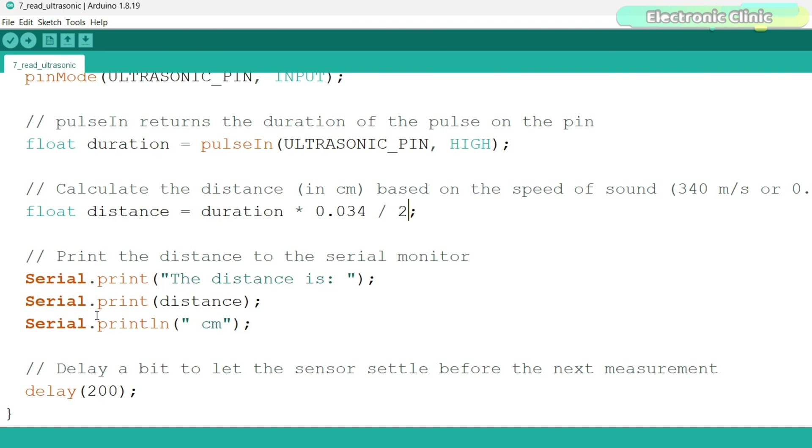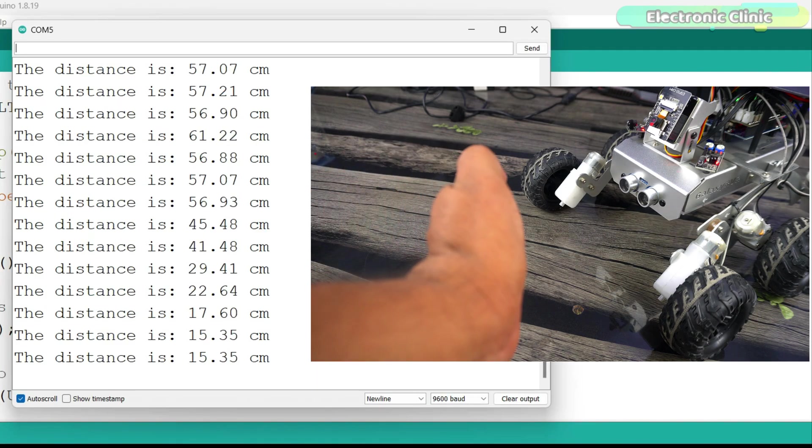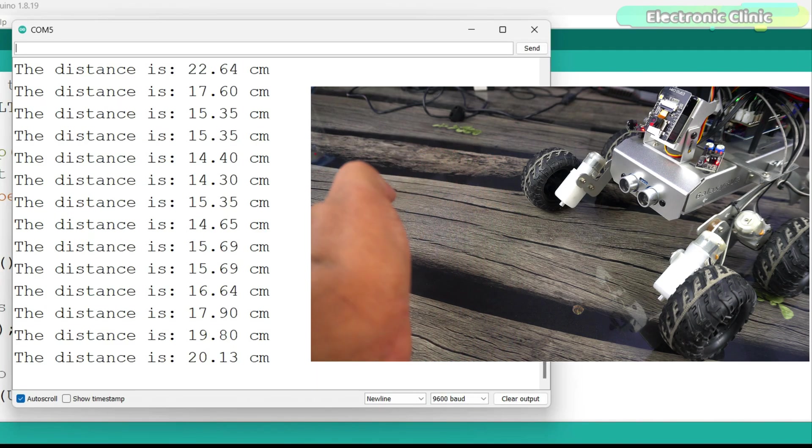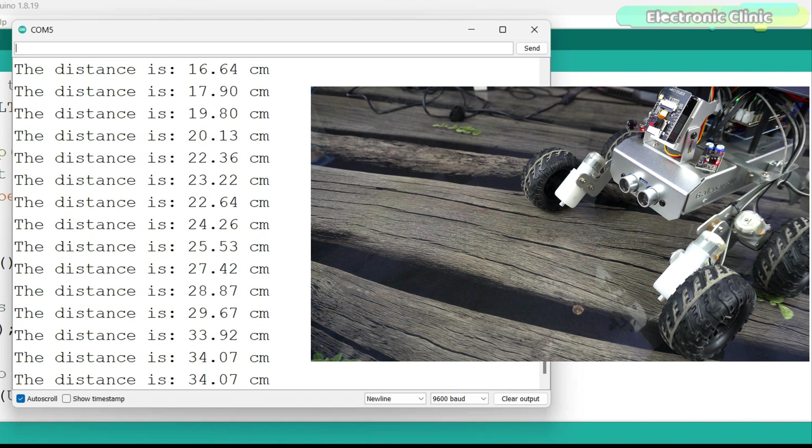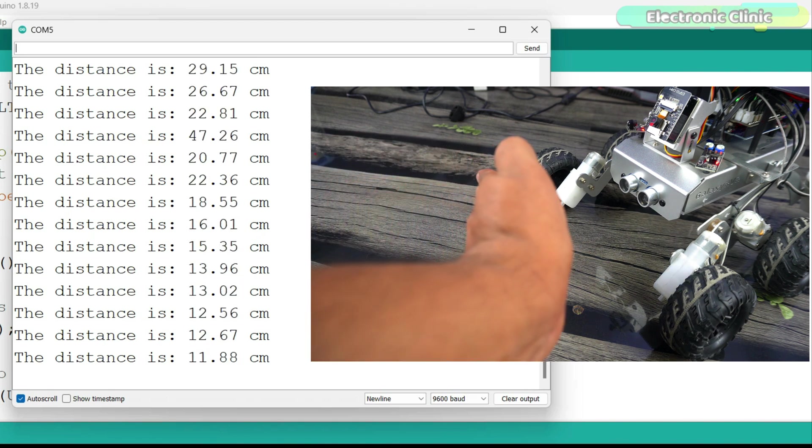Finally, we use these instructions to send the distance value to the serial monitor. Now, let's upload this program. Now, let's turn this into an obstacle avoidance robot using the ultrasonic sensor.